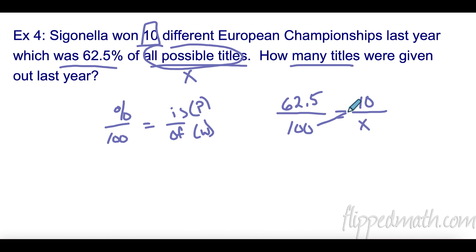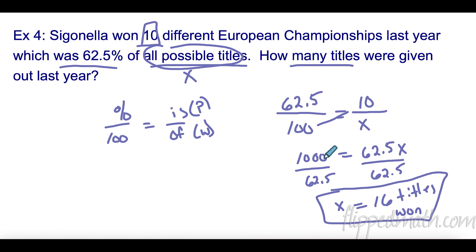Cross multiply: 1000 equals 62.5x. Divide both sides by 62.5, and we find there were 16 total titles. That was the whole number of possible titles that year. Siginello won 10 of them, which was 62.5%.